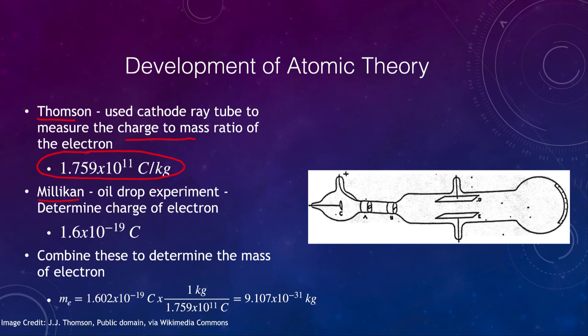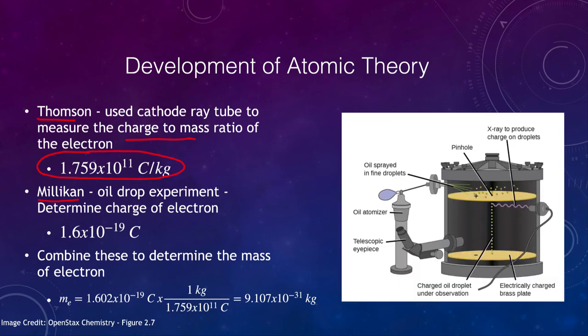Millikan did an oil drop experiment, and the oil drop experiment, something like this here, where oil droplets were sprayed through, the x-rays produced charges on those droplets, and then you had plates, and you could adjust the charge of those plates to allow to keep the oil droplets suspended. And that allowed us to determine the actual charge on the electron of 1.6 times 10 to the negative 19th coulombs.